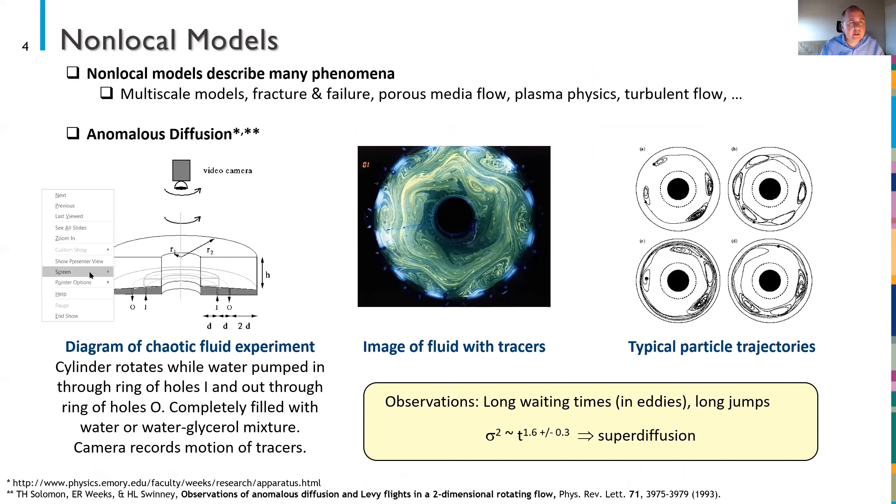We're all interested in non-local models and this is an interesting example of a non-local model that was pointed out to me by Mamikon Gulian, who's our current von Neumann fellow at Sandia. This is work actually from some time ago, but there are always questions that arise depending on who you're talking to about whether or not non-local models are real or physical in some way or if they're just a mathematical convenience. This is a diagram of a chaotic fluid experiment where the inner and outer cylinders rotate while water is pumped through a ring of holes marked I and out through a ring of holes marked O. The cylinder is filled with either water or some water glycerol mixture and tracers are put in it. A camera at the top records the motion of those tracers.